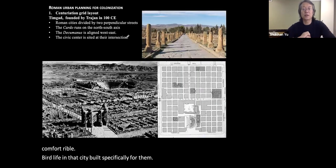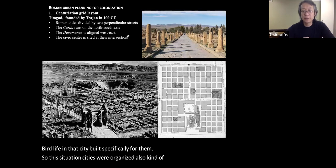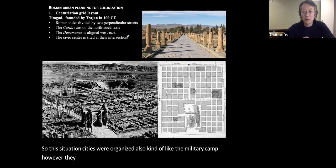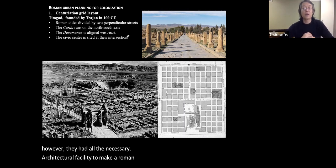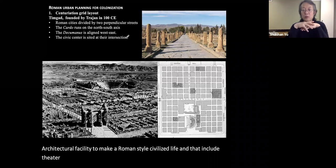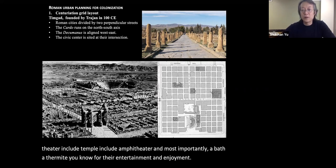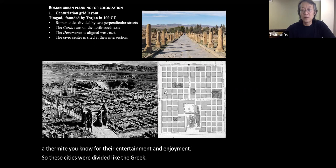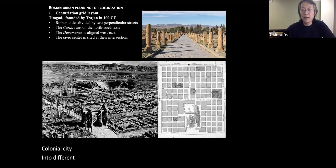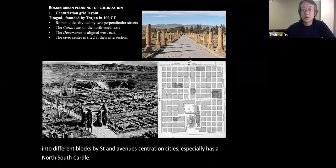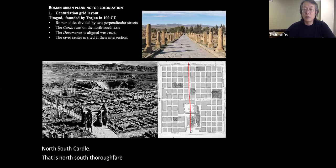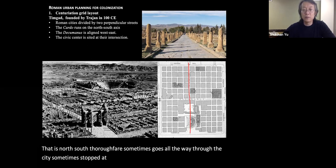These centuriation cities were organized like a military camp, but had all the necessary architectural facilities to make a Roman-style civilized life — including a theater, temple, amphitheater, and most importantly, a bath. The cities were divided into different blocks by streets and avenues. They had a north-south cardinal thoroughfare, sometimes going all the way through the city and sometimes stopping at the public civic building.